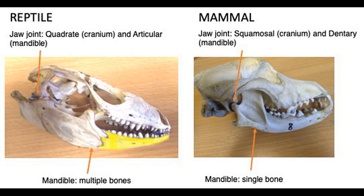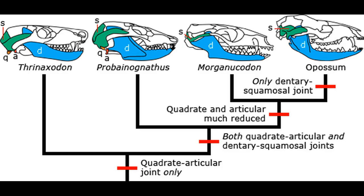However, the original condition, which is still seen in reptiles and amphibians, involves possessing several lower jawbones — importantly the dentary, angular, and articular — with one middle ear bone, the stapes. So how did our ancestors go from one condition to the other? The short answer: the articular became the malleus, and the quadrate became the incus.